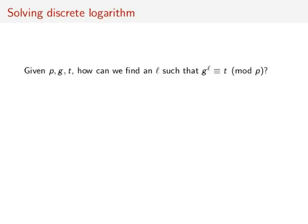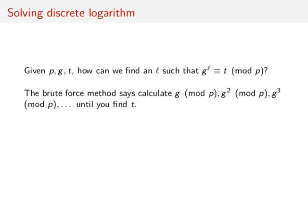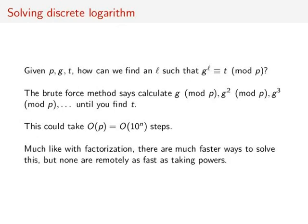So that's taking powers. What if we want to actually solve the discrete logarithm and figure out which power was used? Given p, g, and t, how can we find an L such that g to the L is congruent to t mod p? Well, there's one obvious brute force method: calculate g mod p, then g squared mod p, then g cubed mod p, and so on until you find t. This could take big O of p steps, or roughly big O of 10 to the n. Much like with factorization, there are faster ways of solving this, but none are remotely as fast as taking powers.